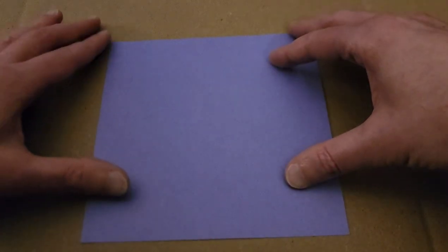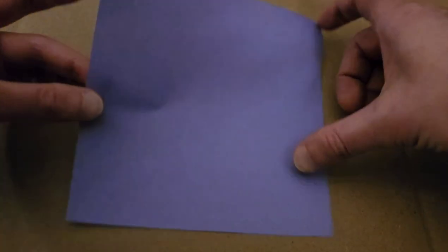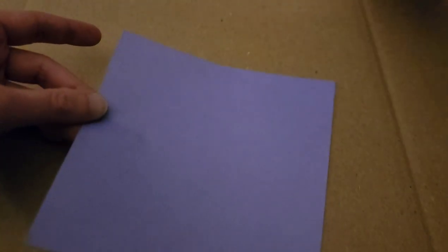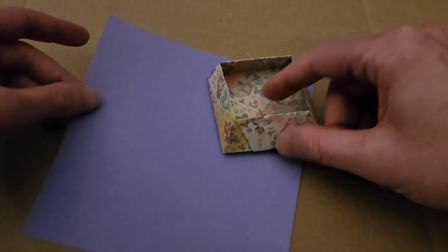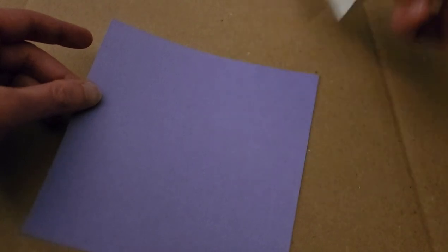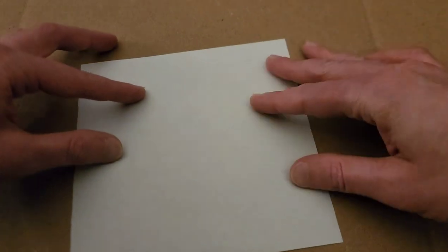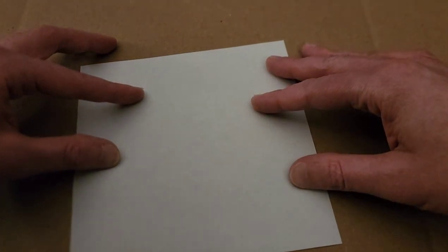Alrighty, so I have my square piece of paper. This is, by the way, six inches square, and I'm going to want the color to be on the sides and on the inside. The alternate color is going to be on the very bottom, so you won't really see it. That being said, I'm going to start with the colored side facing down,